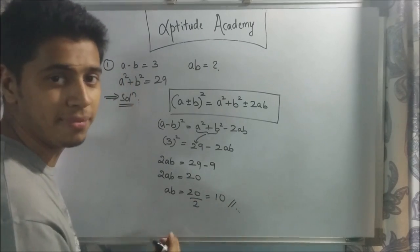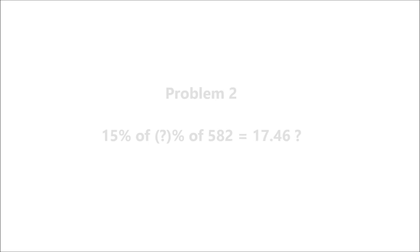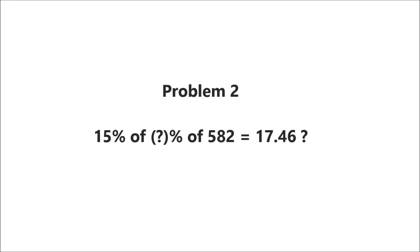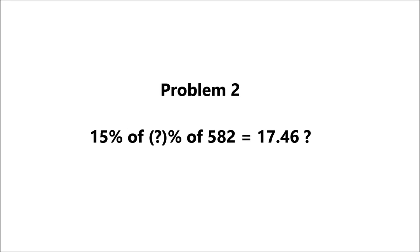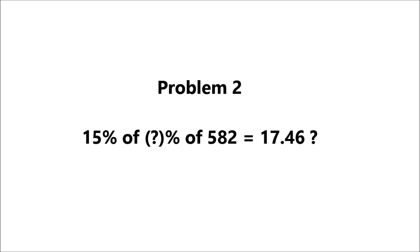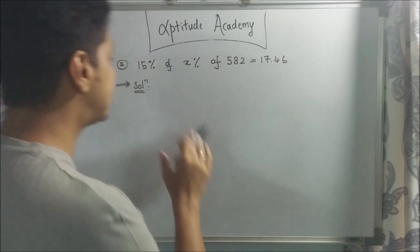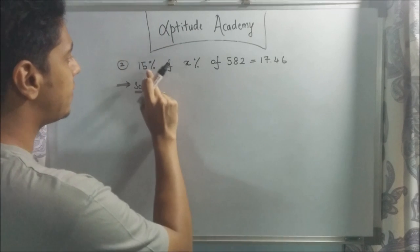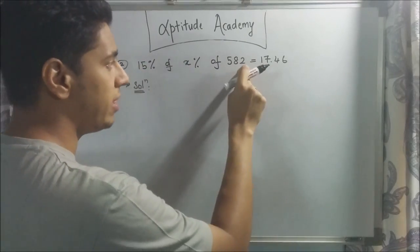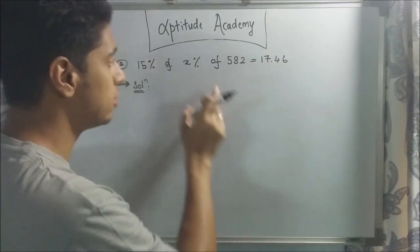That is your final answer. Let's go on to Problem 2. Problem 2: 15% of what percent of 582 is equal to 17.46? For the second sum, we've said that 15% of x% of 582 is equal to 17.46. So what is x?